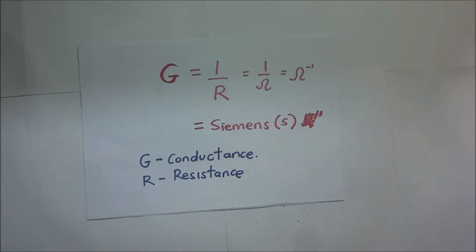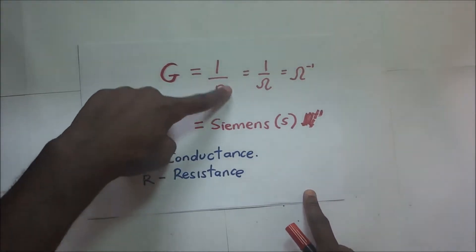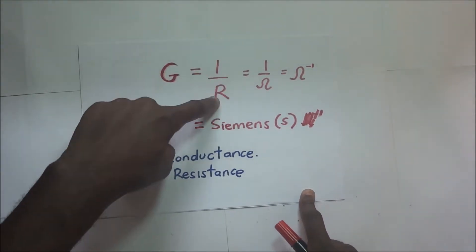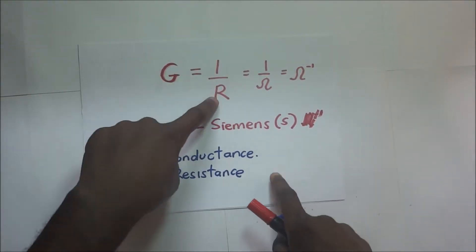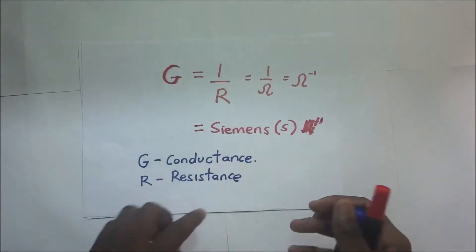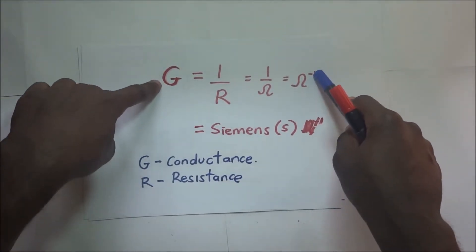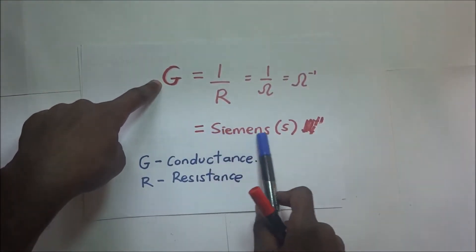The reverse of resistance is what we are calling conductance. Conductance is denoted by G, which is the reciprocal of resistance: one over R. We know resistance's SI unit is the ohm, so one over ohm gives us ohm to the power negative one, and the SI unit for conductance is called Siemens.